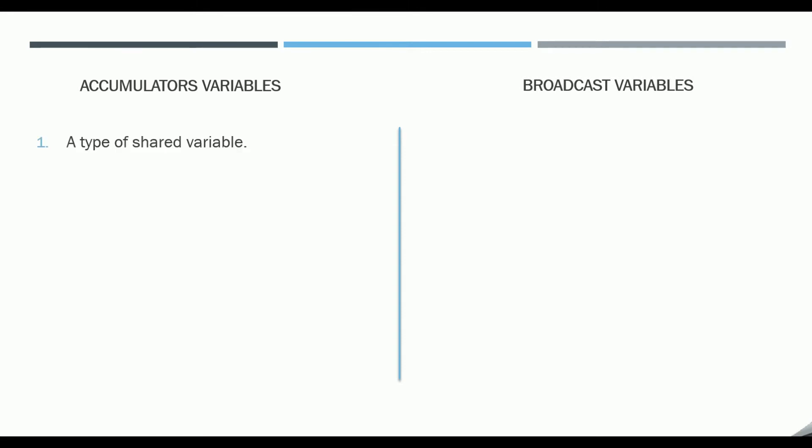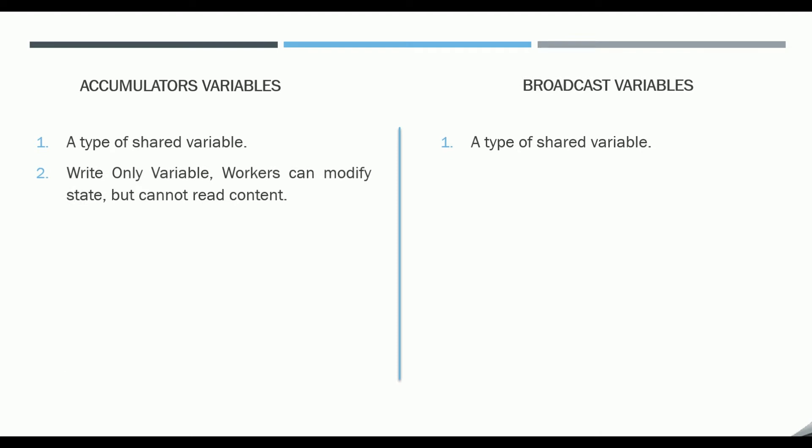Both accumulators and broadcast variables are shared or common variables in Spark, which are initialized in the driver program and shared among all the worker nodes. Point number two: write-only variable — workers can modify state but cannot read content.